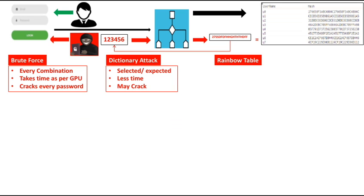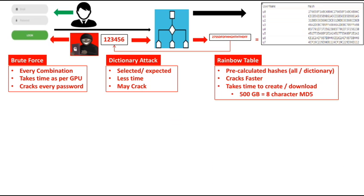The third technique is the rainbow table, which may combine the brute force or the dictionary list.